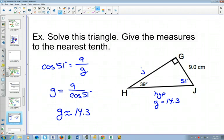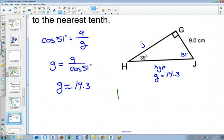If I wanted to find j, I would use 51 as well. And then this is the opposite side and this is the adjacent, so then I would go to tan. Tan of 51 is equal to opposite j over adjacent 9.